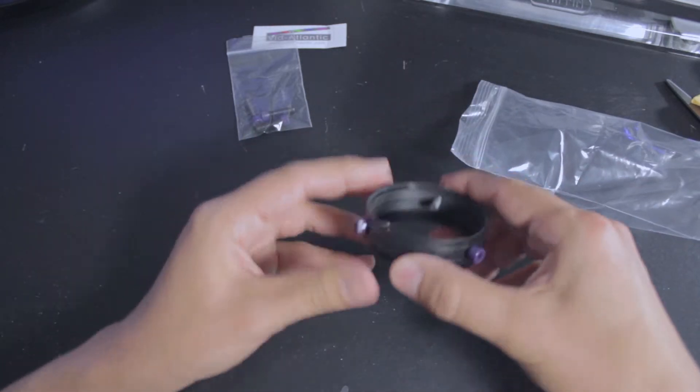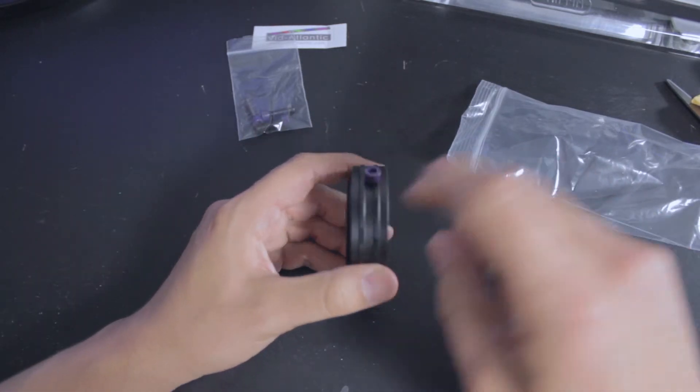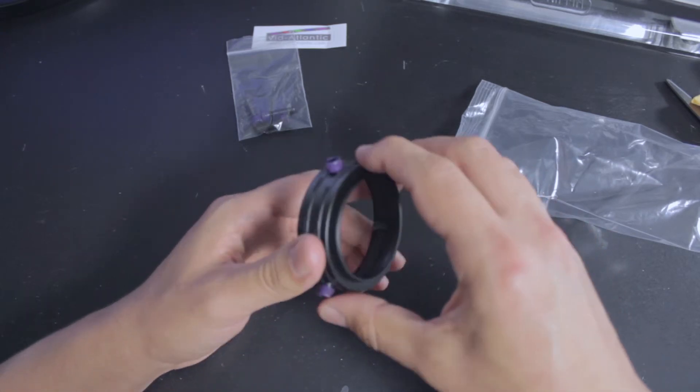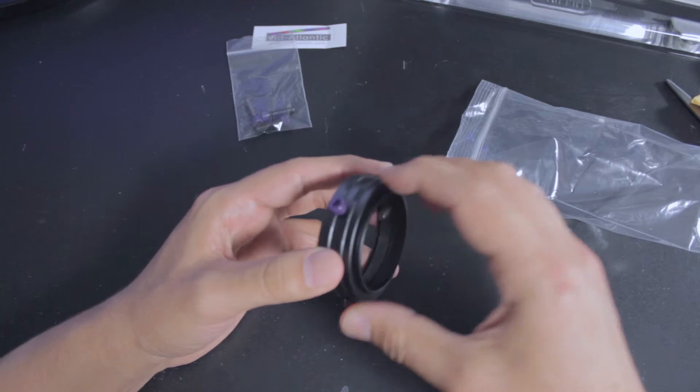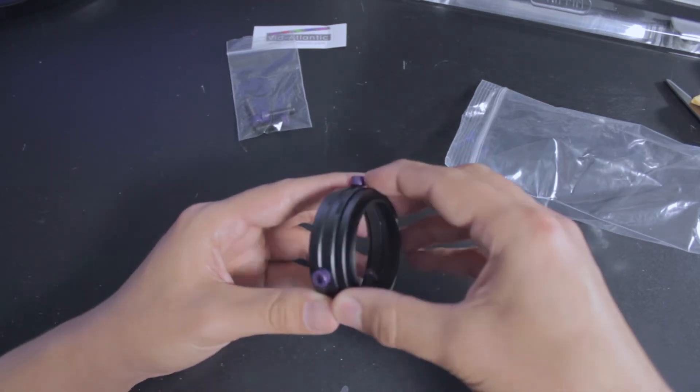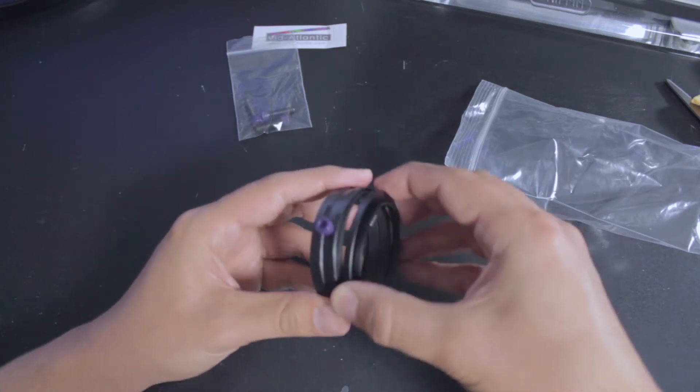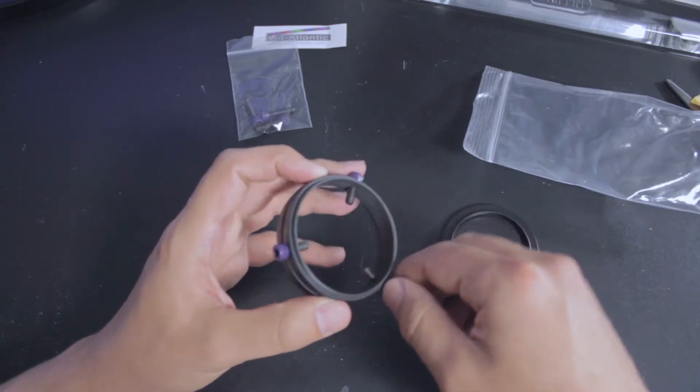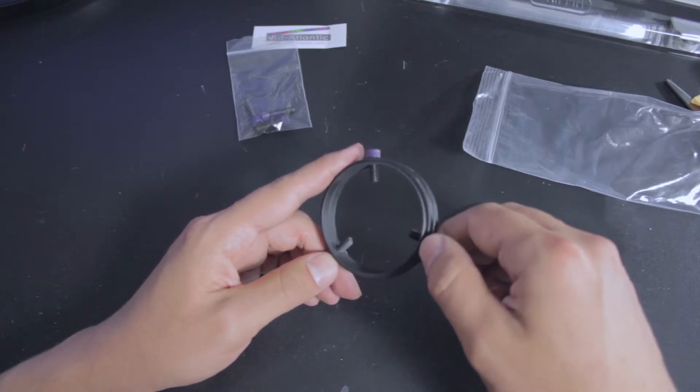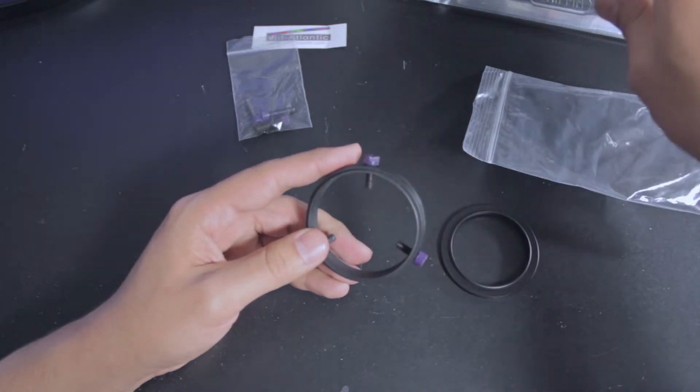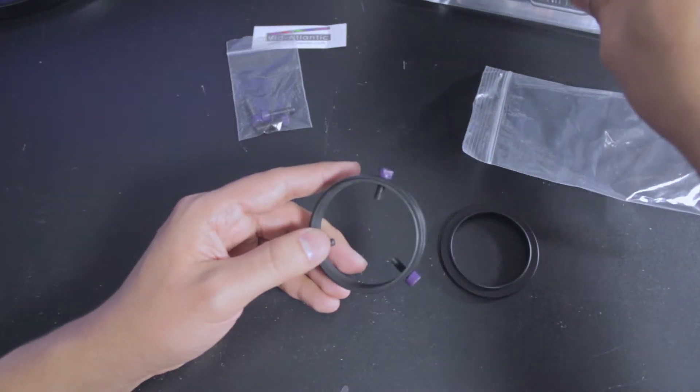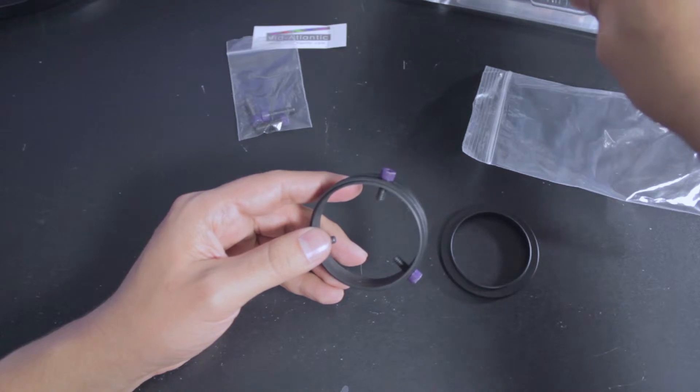Now we're getting to the 52 millimeter thread clamp itself. Feels kind of strong. This twists off - this is actually the step-up ring for the 52 millimeter. Its original size is, I believe, 60 millimeters. Let me check the website.